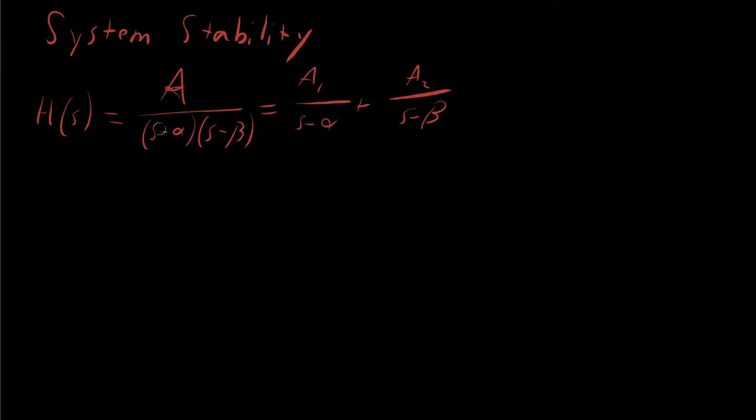Just rewriting this equation, or this expression. And now what we're going to do is we're going to convert this back into the time domain, so that we can make some intuitive statements about what it means to be stable with these poles.